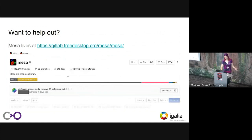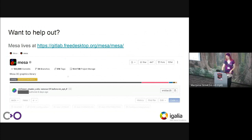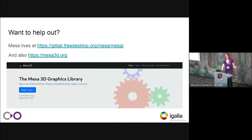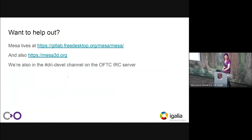If you're interested in checking out what we've been doing or want to help out, the code lives on the freedesktop GitLab instance. We also have a website, mesa3d.org, which is mostly documentation — some detailed code documentation and some getting-started guides like how to build it. You can also come chat with us on the #dri-devel channel on the OFTC IRC server. We also hang out in some Discord servers, though those are not official. That's it — do you have any questions?